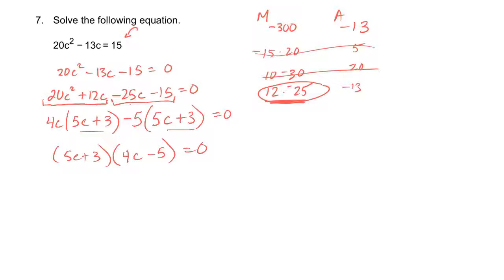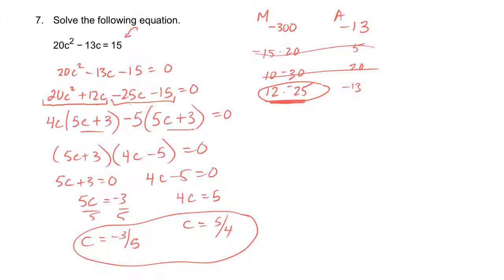And then I'm left with 4c minus 5 is equal to zero. Again, I'm not done. I've just factored. But now I'll say 5c plus 3 is zero, or 4c minus 5 is zero. Solving each one, I get 5c equals a negative 3. Divide by 5. 5c is negative 3 fifths. And this one, 4c is equal to 5. C equals 5 quarters. So those would be my two answers for that.